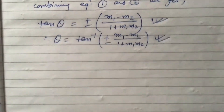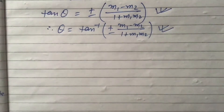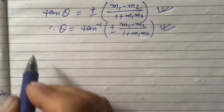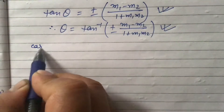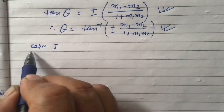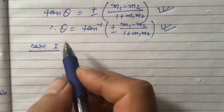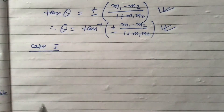So now we have two special cases. Case 1: what will happen if the lines are parallel?